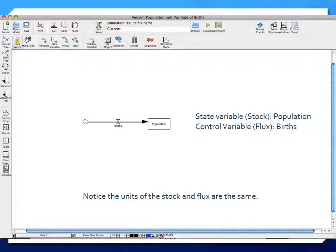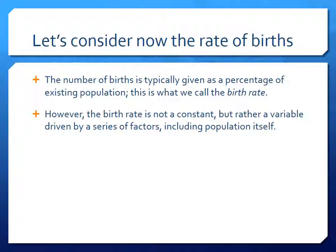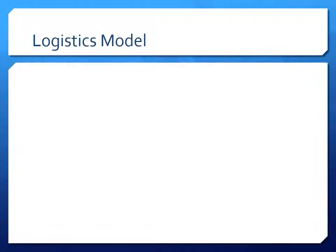Looking more closely at rates: the rate of births is typically given as a percentage of the existing population — this is the birth rate. This birth rate is not a constant; it's a variable that changes over time, influenced by a series of factors including population itself. One way to model birth rates is through what we call the logistic model or logistic equation — a classical model used to simulate population growth of not only humans but different species, vegetation, and ecosystems.